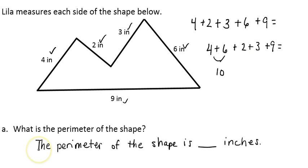4 plus 6 is 10, 2 plus 3 is 5, so let's do 10 plus 5, plus 9, and I'm going to do 5 plus 9 next, that's 14, so 10 plus 14 would give me a total of 24. So the perimeter of the shape is 24 inches.